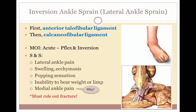The ankle is commonly sprained when the foot is plantar flexed and inverted. Signs and symptoms include lateral ankle pain, swelling, ecchymosis, a popping sensation, and an inability to bear weight or limping. Medial ankle pain may also be present as a result of compression of the deltoid ligament. We need to rule out fracture and treat the ankle sprain conservatively. Ankle sprains that have not been rehabilitated correctly are usually susceptible to further injury, making rehabilitation very important to regain function.